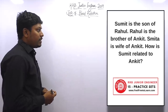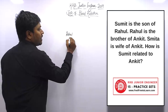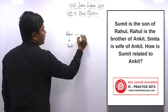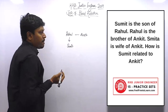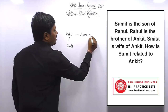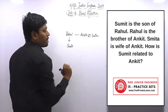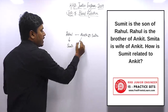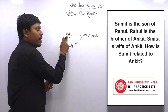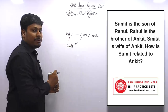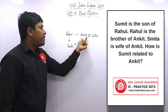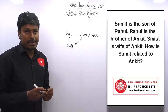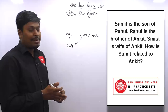Question number twenty: Sumit is the son of Rahul. Rahul is the brother of Ankit. Smitha is the wife of Ankit. The question is: how is Sumit related to Ankit? From Ankit, Rahul is the brother, and Rahul's son is Sumit. A brother's son is called a nephew. The answer is nephew.